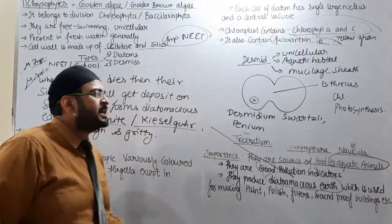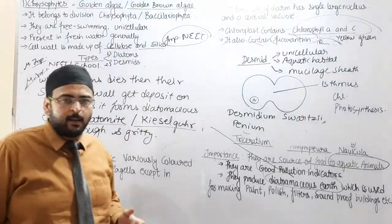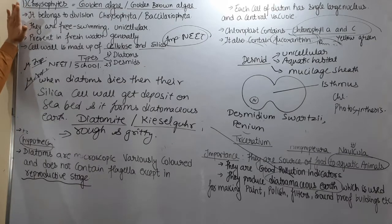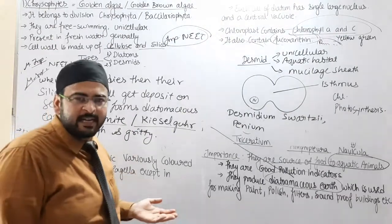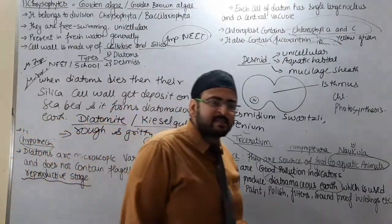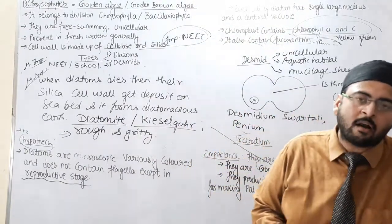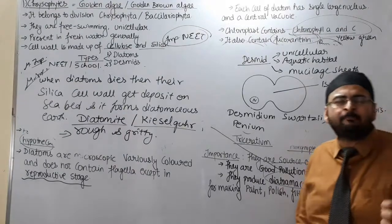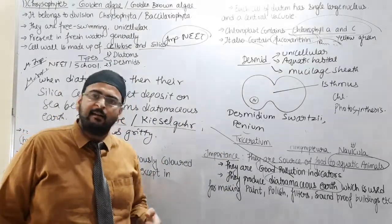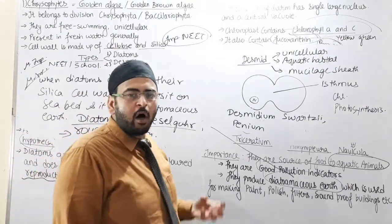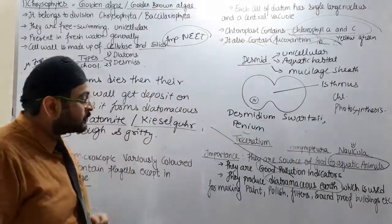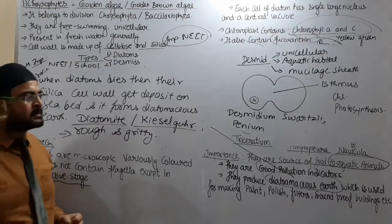So Protista kingdom की first category थी Chrysophytes, which is divided into two parts — Diatoms and Desmids. एक interesting point: एक whale जिसका normally weight 60 tons तक होता है, उसकी body के अंदर generally two tons तक Diatoms मौजूद हो सकते हैं. Whale भी Diatoms को खाती है — तो ये interesting point था for Diatoms. Thank you.